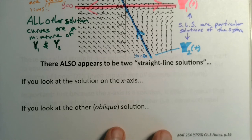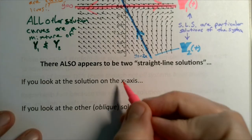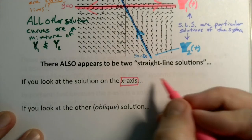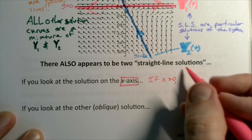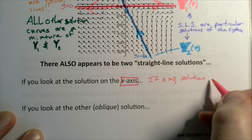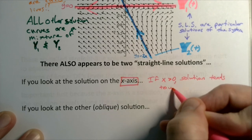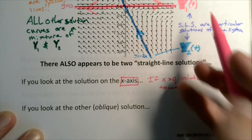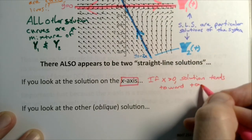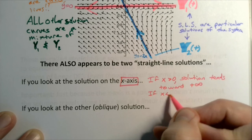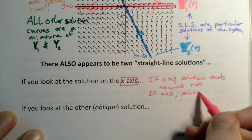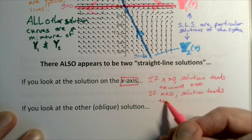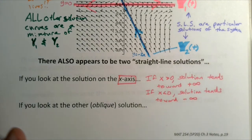So down on the bottom of this page, if you look at the solution on the x-axis - that is the pink one up there - remember, if x is greater than zero, the solution tends towards positive infinity. It's heading out in that direction. And if x is less than zero, if it's to the left of the origin, the solution tends toward negative infinity. So you can see that pretty clearly.